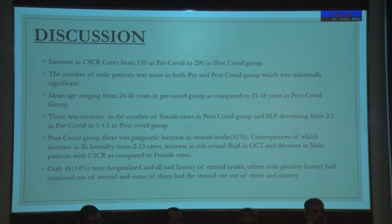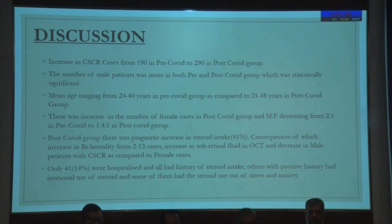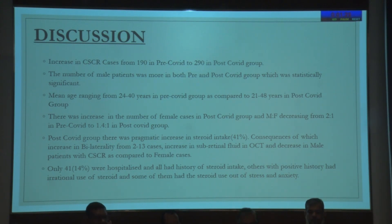In the discussion, CSR cases increased from 119 pre-COVID to 219 post-COVID. Males were more in both groups, which was statistically significant. Mean age ranged from 20 to 40 years pre-COVID versus 21 to 48 years post-COVID. There was an increase in female cases post-COVID, with the male-to-female ratio decreasing from 2:1 to 1.4:1. In the post-COVID group, there was a dramatic increase in steroid intake at 41%, with consequent increase in bilaterality of disease, increased sub-retinal fluid on OCT, and a relative decrease in the male predominance.